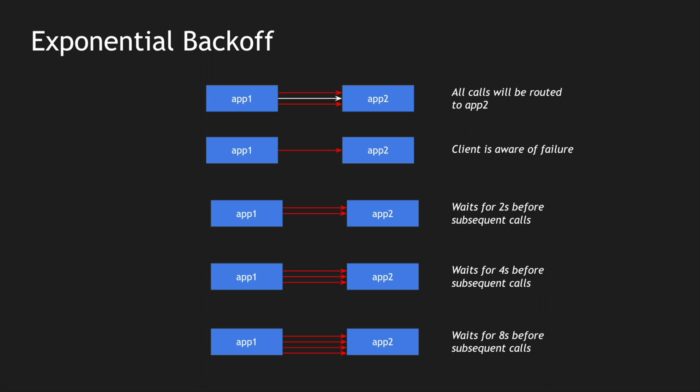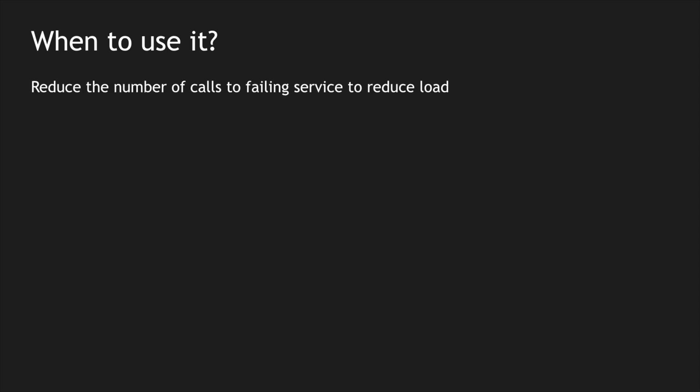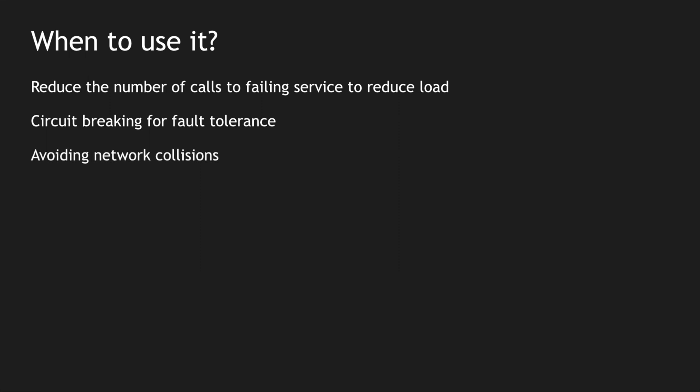We need to use exponential back-off when we need to reduce the number of calls to a failing service to reduce the load on that server. There could be a recovering server with a fleet of, say, 50 servers, and adding more load could bring the recovering services down again. In microservices, it is used predominantly in the circuit breaker pattern to reduce fault tolerance from the application side and reduce the number of calls to the destination service.